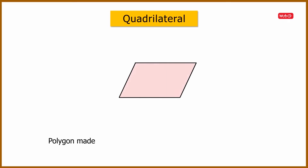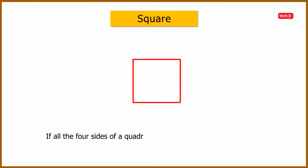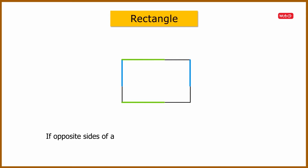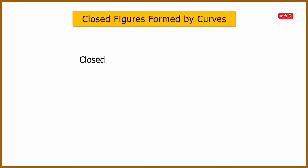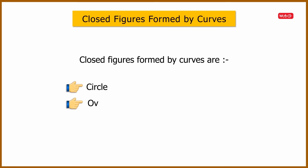A polygon made up of four line segments is called a quadrilateral. If all four sides of a quadrilateral are equal, then it is called a square. If opposite sides of a quadrilateral are equal, then it is called a rectangle. Now let us learn about some closed figures formed by curves — a circle and an oval.